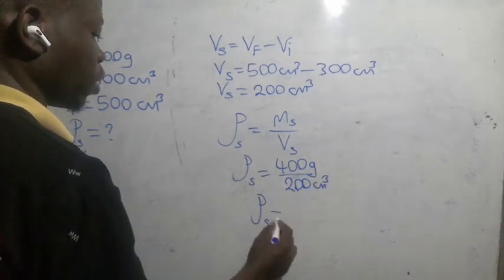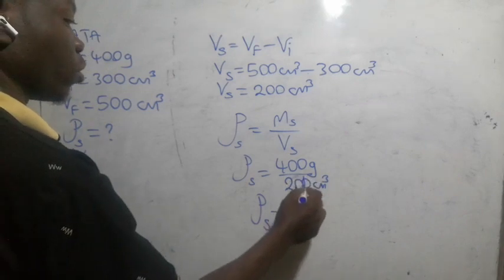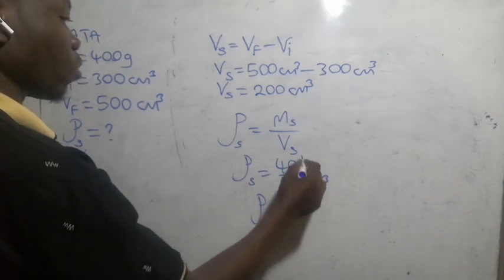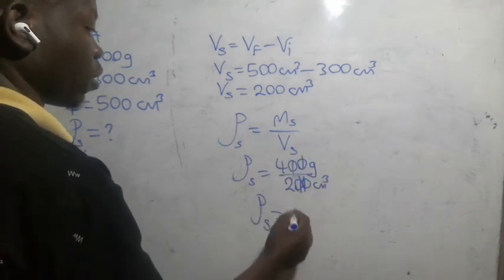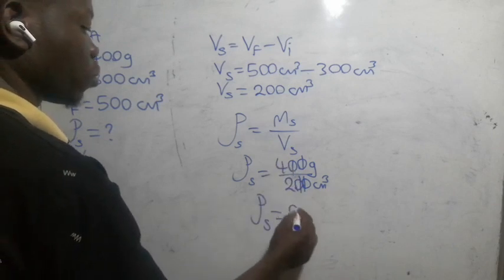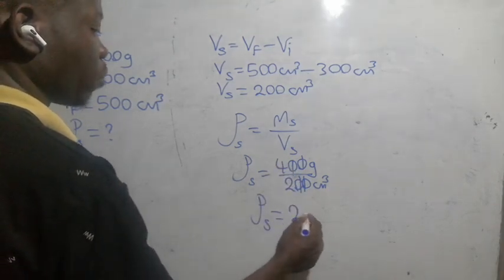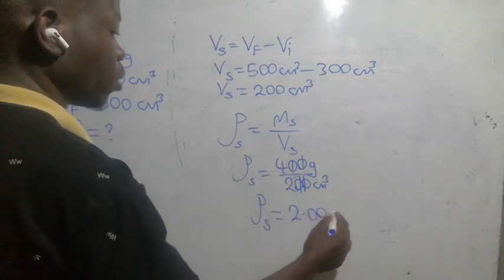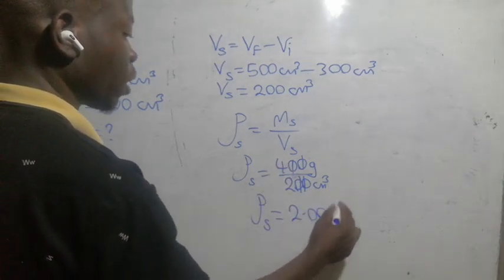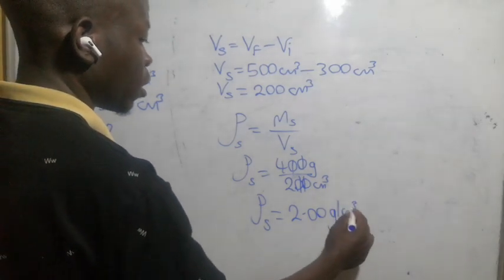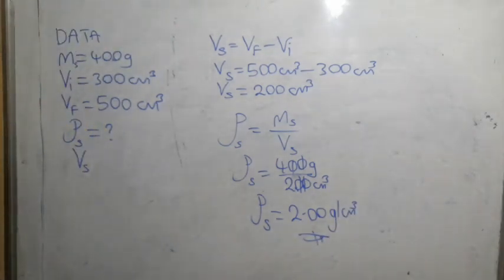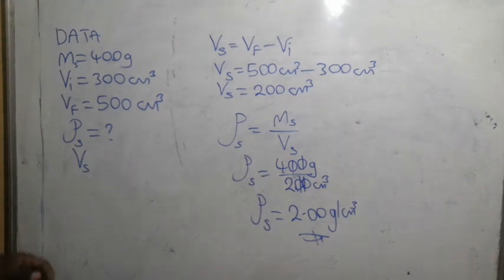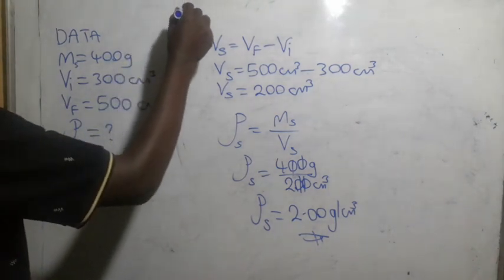Dividing, 400 by 200 gives us 2.00 grams per cubic centimeter. So the density of the stone is 2.00 g/cm³. This is how you should answer this question — it came in 2009.